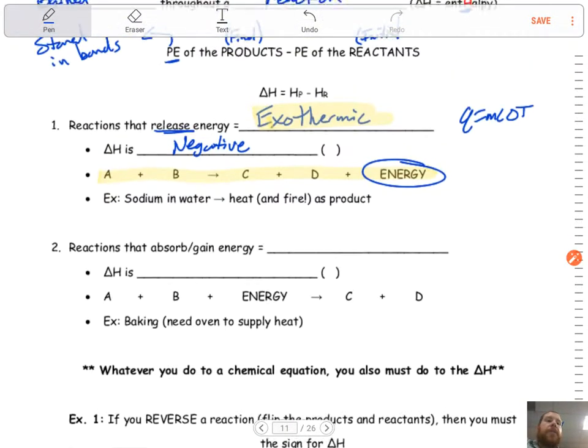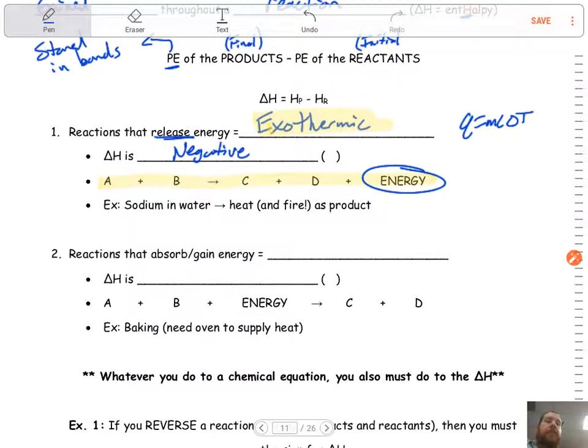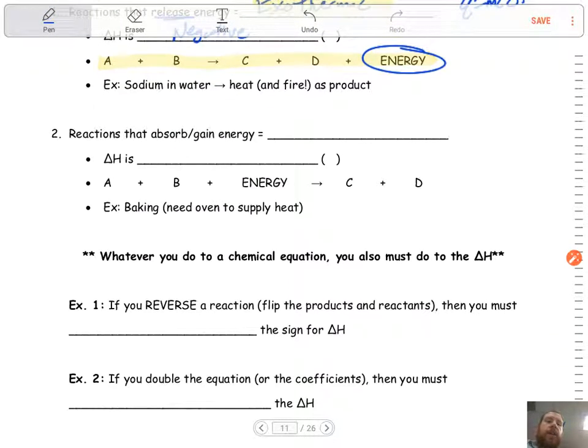All right, so if exothermic is one type of reaction and it releases energy, what would we call a reaction that absorbs or gains energy? It's the opposite of exo, which would be endothermic.